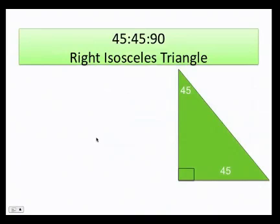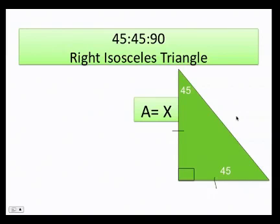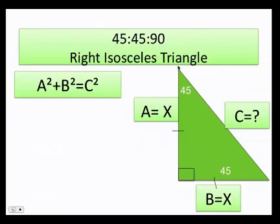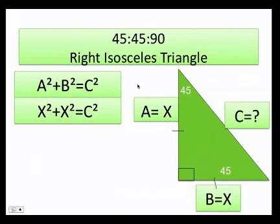Now let's talk about the right isosceles triangle. There are several characteristics that define it. This triangle has two equal sides — this side is always equal to this side. If I call one leg x, the other leg is also x. The hypotenuse is the value of c. Using Pythagoras: a squared plus b squared equals c squared. Substituting x for a and b, we get x squared plus x squared equals c squared.